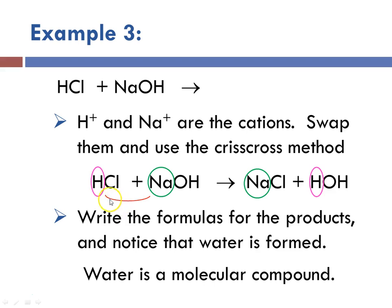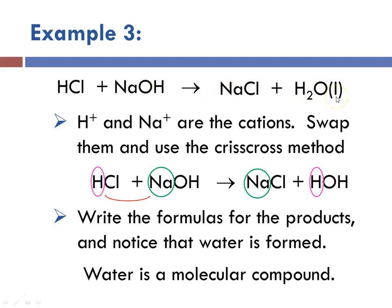We can check to see if it's balanced: two hydrogens, one oxygen, a sodium, and a chloride — it looks balanced. HCl plus NaOH yields NaCl plus H₂O. I've indicated the molecular compound with a little L for liquid. This is a special type of double replacement called a neutralization, because it's the reaction of a strong acid with a strong base to produce a salt and water.